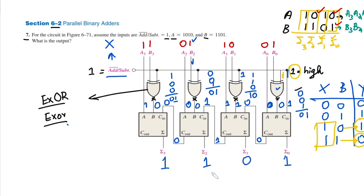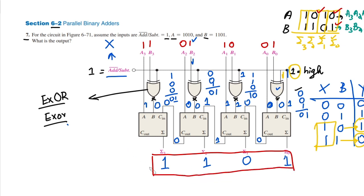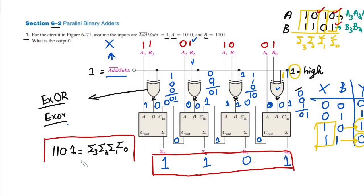So the output is 1101 — that is sigma3, sigma2, sigma1, and sigma0 — which is the answer to this question. In this question I have illustrated that how a simple adder can be used as a subtractor as well. I will see you with some more interesting questions in our upcoming video — take care of yourself and I will see you soon.